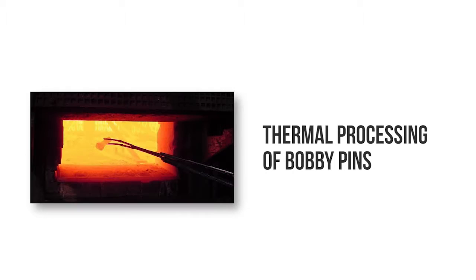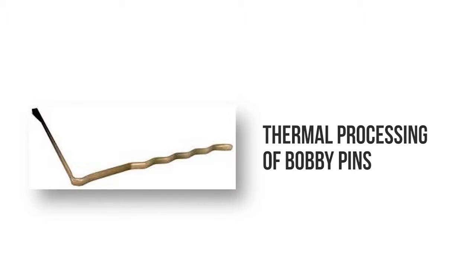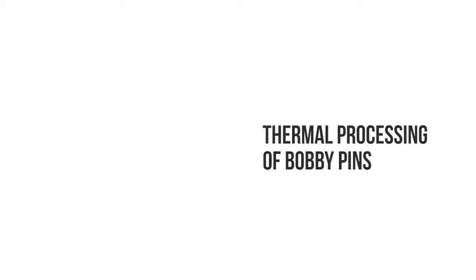The objective of this lesson is to show the difference that processing, especially thermal processing, can have on the properties of a material. In this lab, students will see how thermal treatment of a normal steel bobby pin can influence its mechanical properties, especially strength, ductility, and deflection.